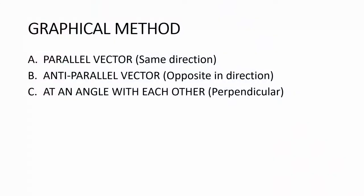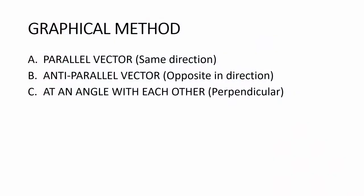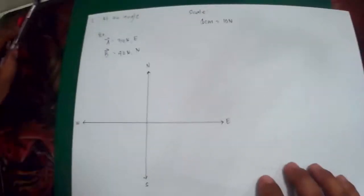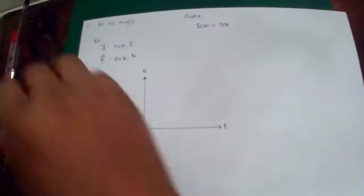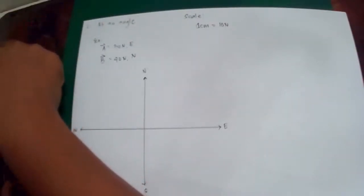Let's go to our last vector, which is case 3, a vector at an angle with another. How about if the vector is perpendicular? Example, at an angle. I have already written the samples here so that we can utilize our time.